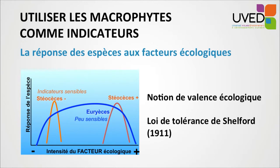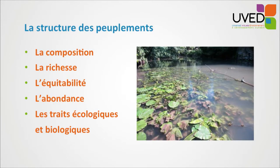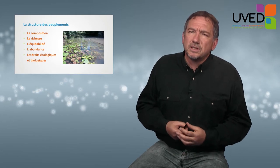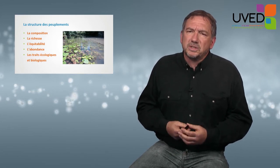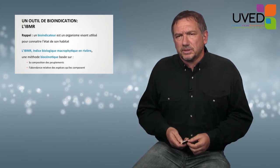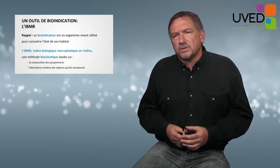Other species are far less sensitive, much more tolerant — these are called eurytopic species. Other factors may also be used to characterize the structure of the vegetation: its composition, what kinds of species are present, the number of species, the evenness and fair balance between species, the abundance, and ecological and biological traits, which can be used as more sophisticated criteria to describe the structure. The growth form we saw earlier is also an ecological trait.